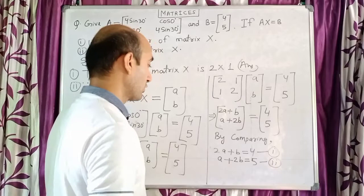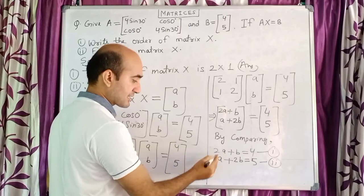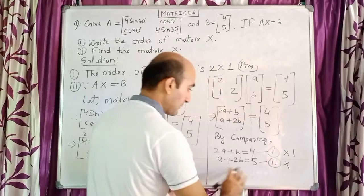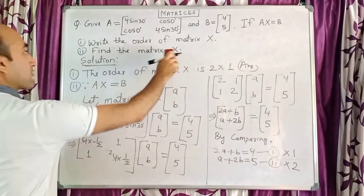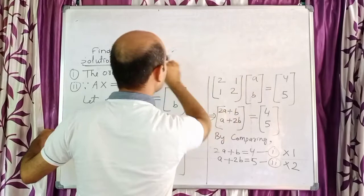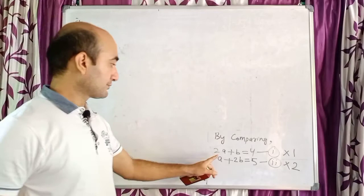We will solve for a and b using the elimination method. To cancel a, we need to make the coefficients of a equal. The LCM of 2 and 1 is 2, so multiply Equation 1 by 1 and Equation 2 by 2.